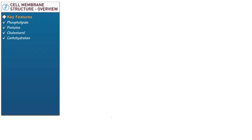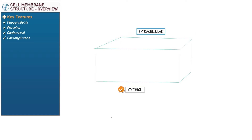Let's illustrate the membrane now. Sketch a three-dimensional rectangle. Label the space above it as extracellular and the space below it as cytosol. Bisect the cube horizontally and indicate that the cell membrane is a bilayer, meaning it comprises two layers. Indicate that the bilayer is specifically a phospholipid bilayer because the most common of its lipids are phospholipids.